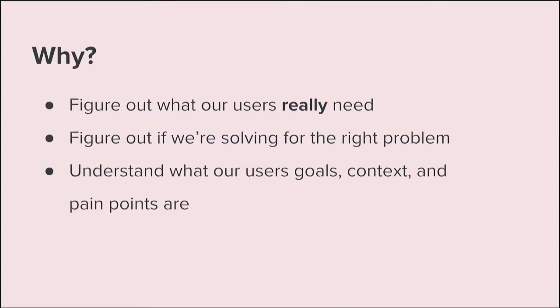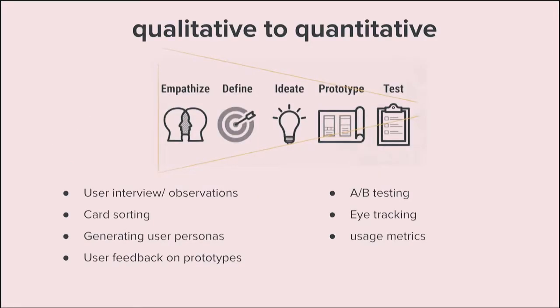That's a crash course on the design thinking process. Why do we do this? We want to figure out what our users really need, figure out if we're even solving for the right problem, and understand what our users' goals, context, and pain points are. When you're going through this process, you're generally moving from a qualitative research process to more quantitative.